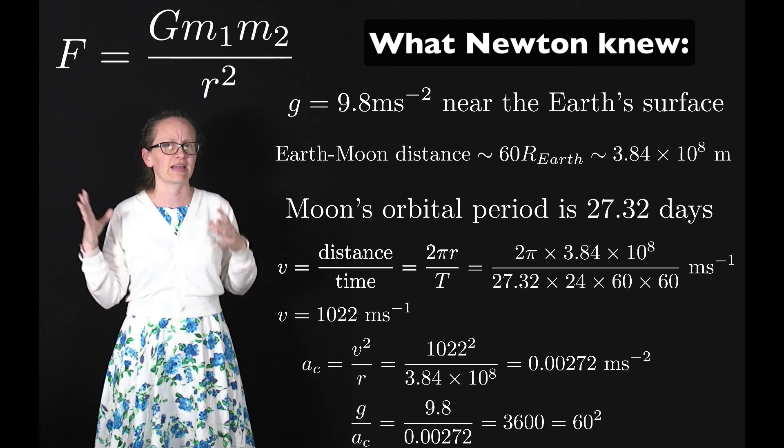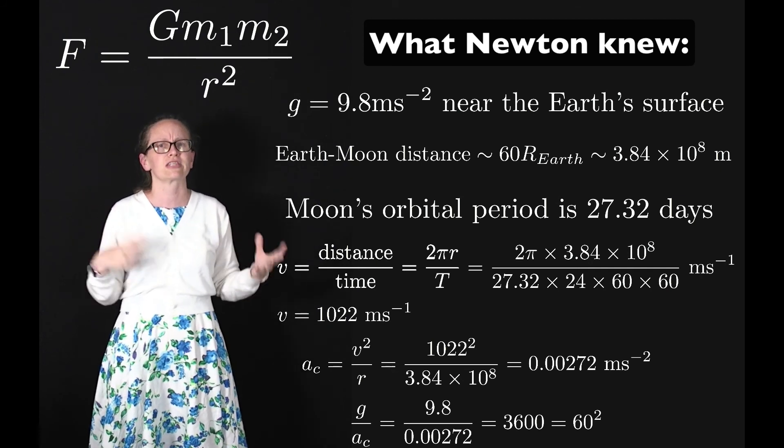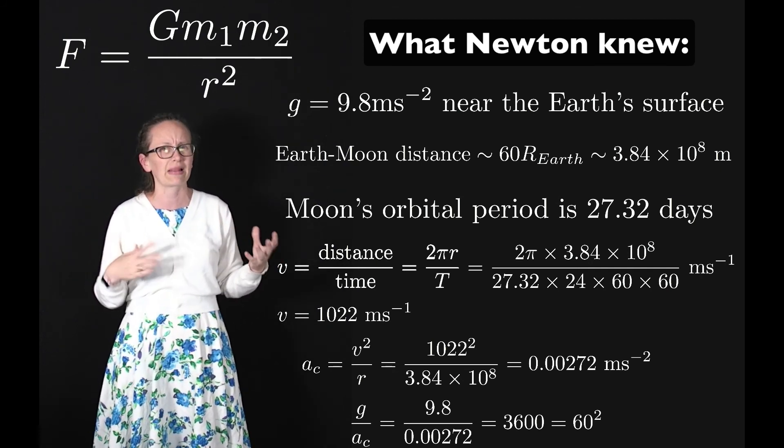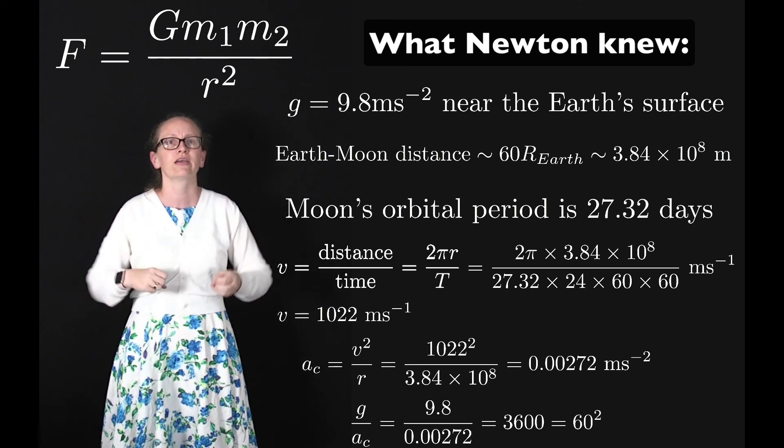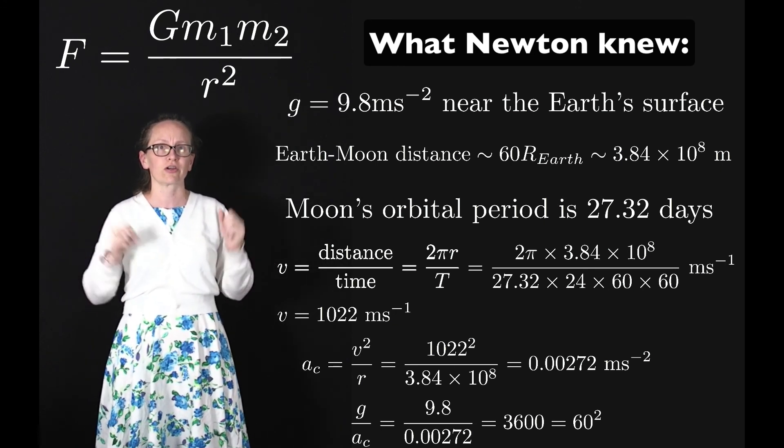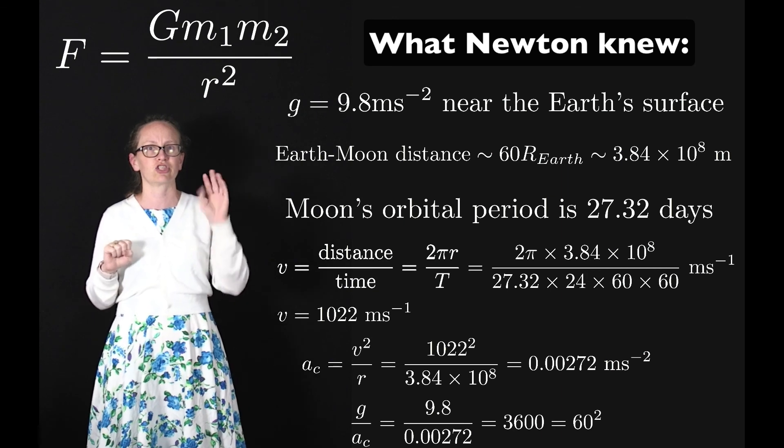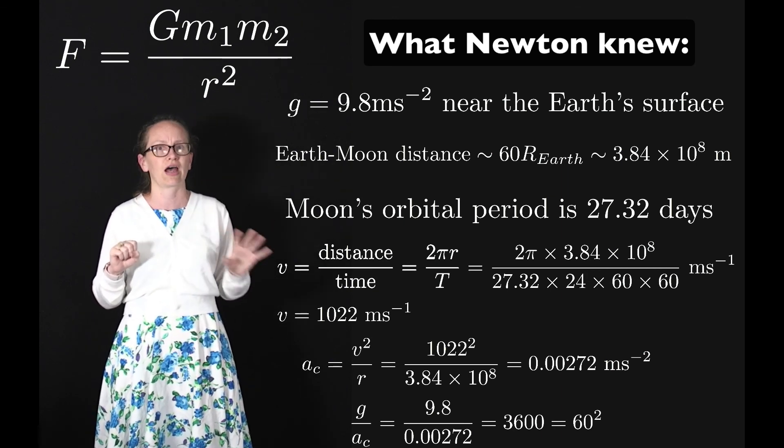Once Newton had come up with this law, he was able to test it for what was known for the planets as well and concluded with his law of universal gravitation that F is equal to G M1 M2 on R squared.